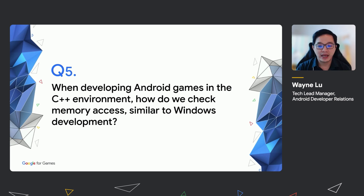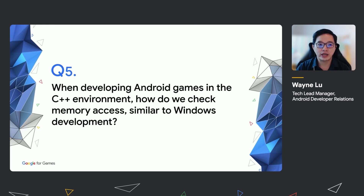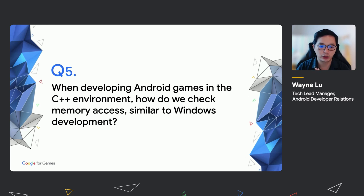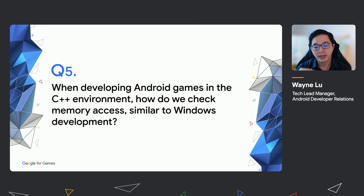For question number five, when developing Android games in C++, how do we check memory access similar to how you do it in a Windows development environment? There are a few differences. The Android OS uses on-trim memory to warn developers about low memory usage. When budgeting for memory in Android, you need to take note of multiple factors such as the size of the physical RAM, the maximum Z RAM on the device, the memory usage of the Android OS, and the memory usage of all installed apps. You also need to avoid memory thrashing — a scenario which occurs on Android devices when there is very low but insufficient memory to actually kill the game. You'll need to manage memory efficiently to avoid reaching this stage.